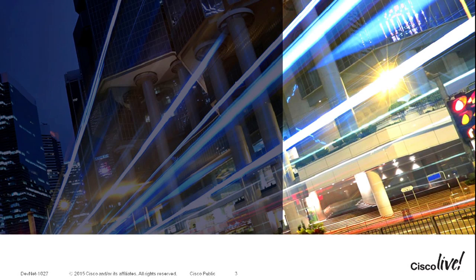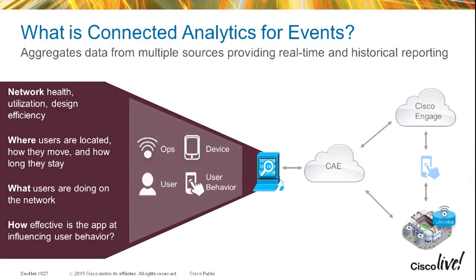We'll also talk about the architecture and streaming analytics. Connected Analytics is a platform we deploy on-premises, or you can send the data into the cloud through Cisco Cloud Services. We'll also be available through Amazon, Azure, and other cloud deployments. We have operational data — you can look at the number of folks connected to access points, monitor behaviors and heat maps in and around specific zones. We get that information from MSE or CMX.